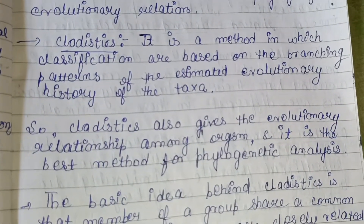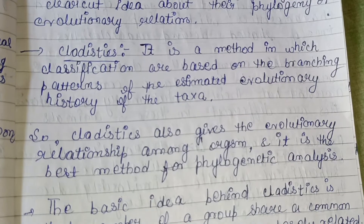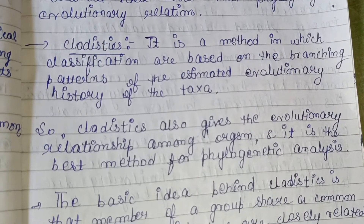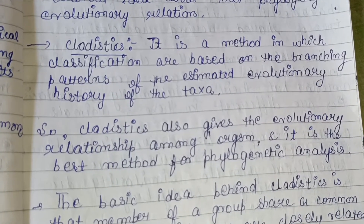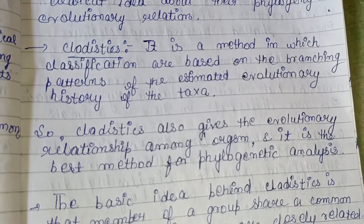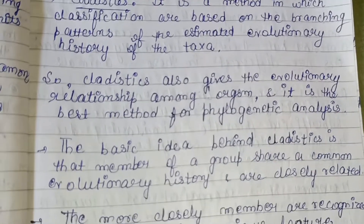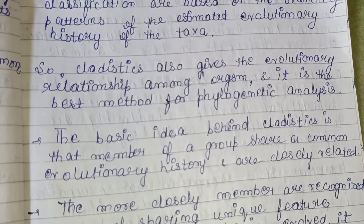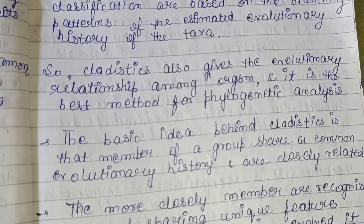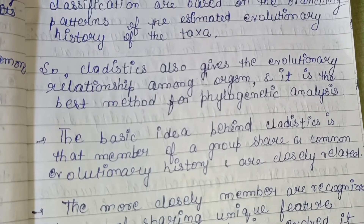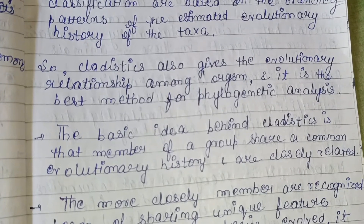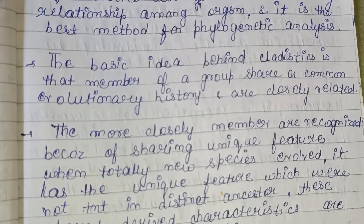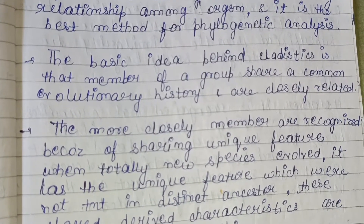Cladistics is a method in which classifications are based on the branching patterns of the estimated evolutionary history of the taxa. In cladistics, not overall characteristics but only the evolutionary history of a taxon is considered. Cladistics gives the evolutionary relationship among organisms and is the best method for phylogenetic analysis of any animal, because it considers the evolutionary history of any taxon.